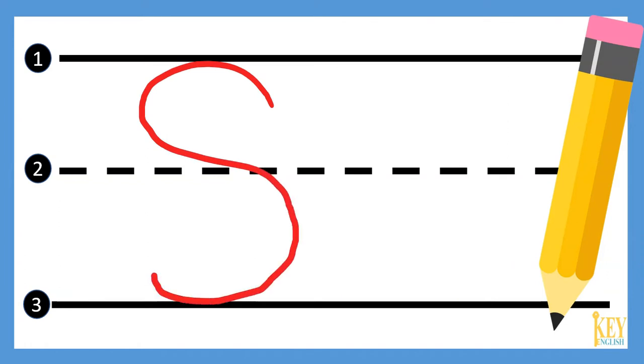This is the capital S. What about the lowercase S? Which line can I put it in? It's in line number two. Also, just a little bit under line number two. This is the lowercase S. Let's see it one more time. Now you know how to write the letter S.